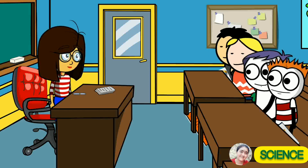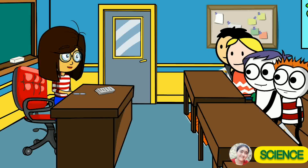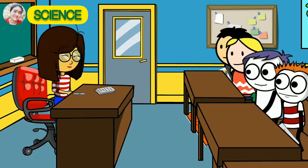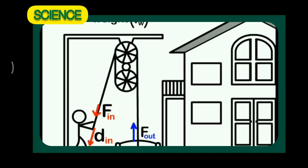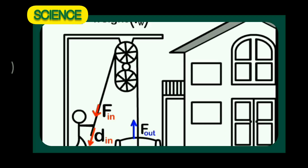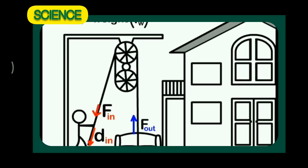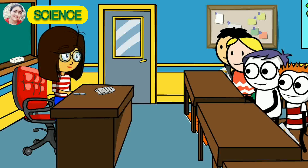Very good. But how do we supply energy to a machine? Can anybody answer? By performing work on the machine. Very good. Now, F-in is the input force which does input work on the machine — this force is applied by us. While F-out is the output force which is applied by the machine to perform the output work.